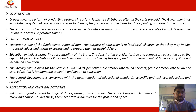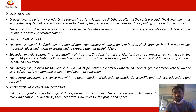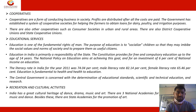The second point of democratic decentralization is cooperatives. Cooperatives are a form of conducting business in society where profits are distributed after all costs are paid. The government has established a system of cooperative societies to help farmers obtain loans for dairy, pottery, and irrigation purposes. There are also consumer societies in urban areas, along with district cooperative unions and state cooperative unions.